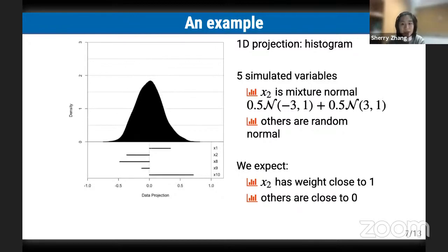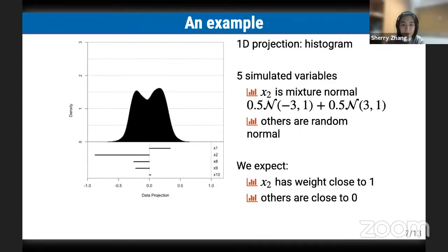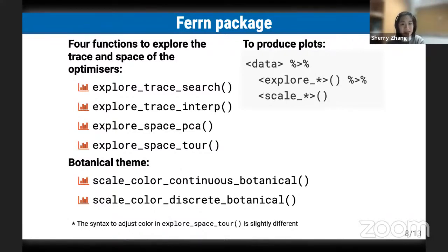This is not the case for all problems as we have seen in the literature. We need some visual tools to help us diagnose where things go wrong. This leads to an R package called FURN where we create four diagnostic plots: two for exploring the trace and two for exploring the space. There is also a botanical theme for scaling the color. Due to time limits, I will go through the two space plots here.